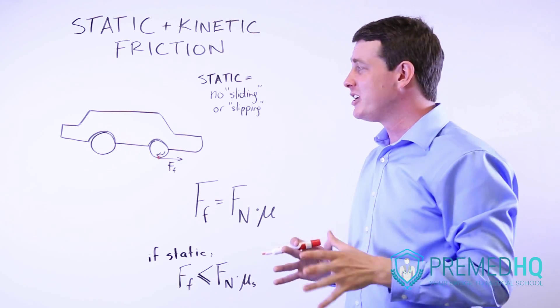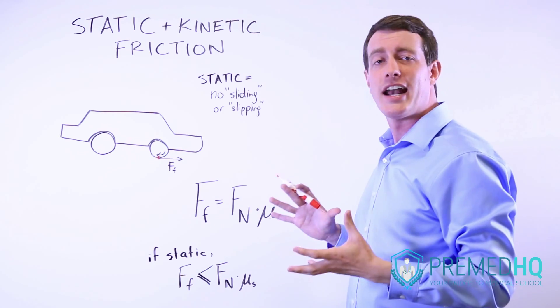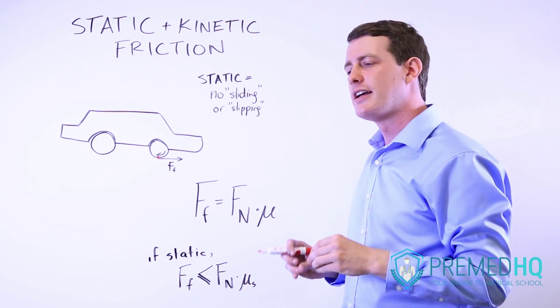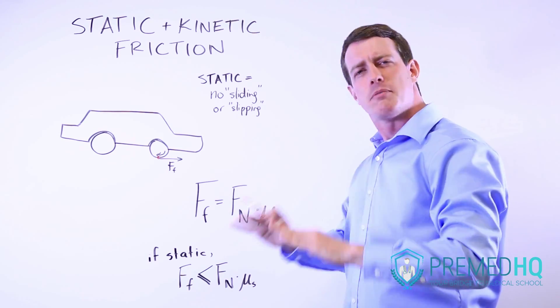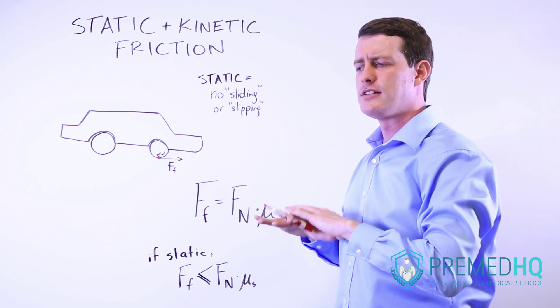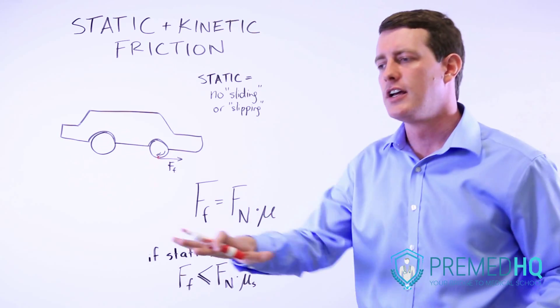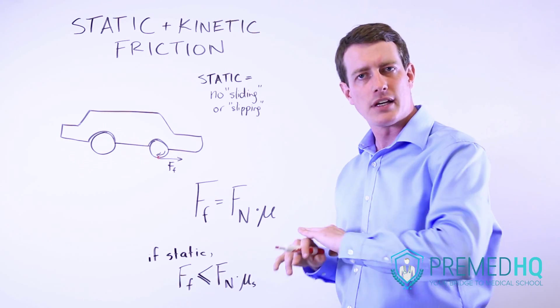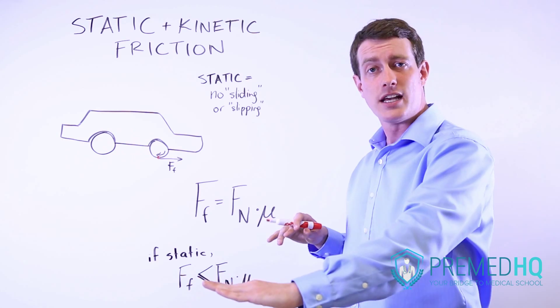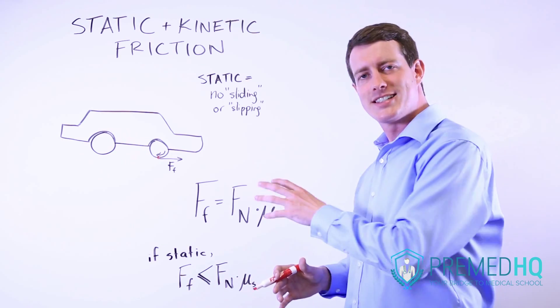So the bottom line is, when you see a question about whether it's static or kinetic, you need to be asking, is something slipping? Is it moving along, is it an ice skate moving along an ice rink, or is it something that's kind of gliding along a surface, something that's sort of sliding along a table? If not, then it's static friction.